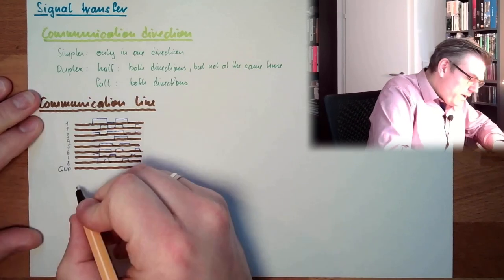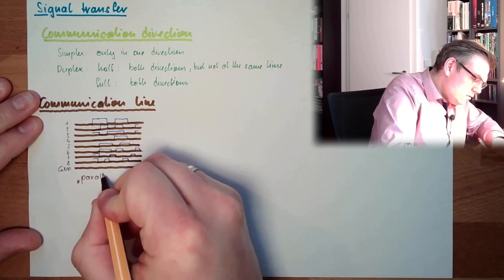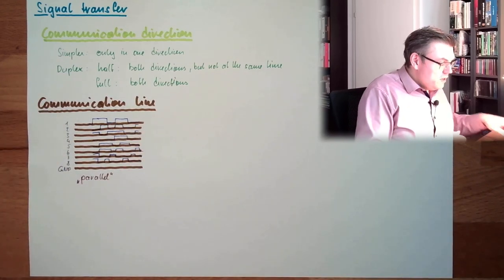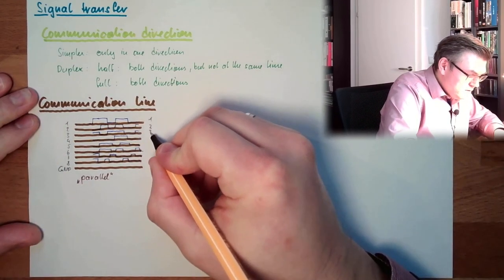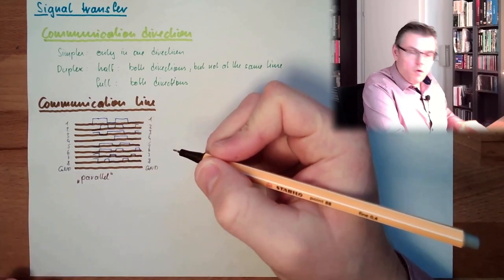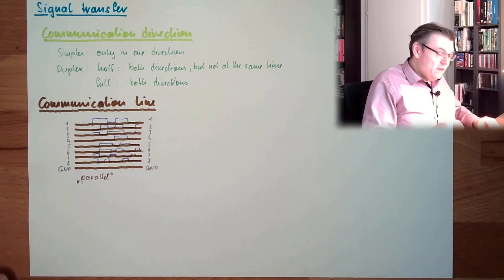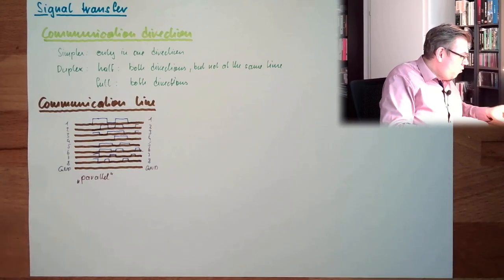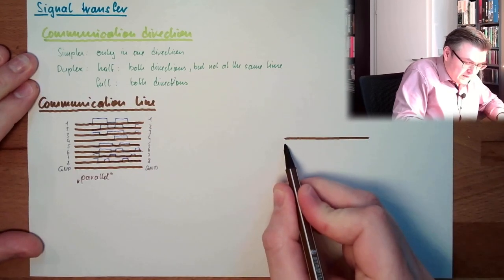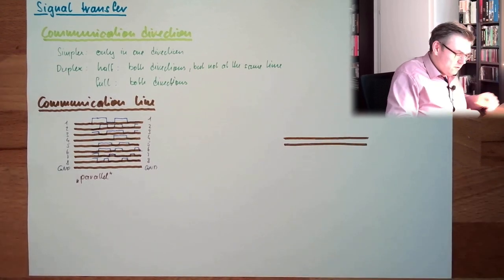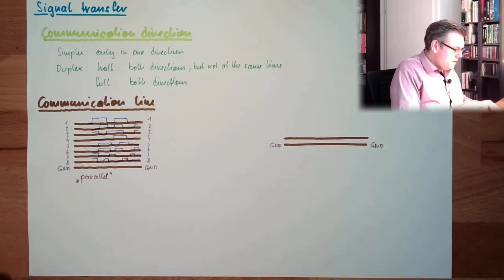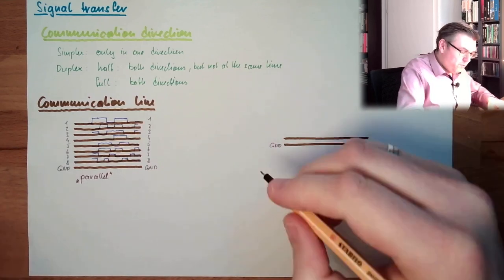This communication is called parallel communication. You see, we need a lot of lines. So here, this is the receiver. And we transfer one after the other. An alternative to this would be I am only using one line and the second line is ground.